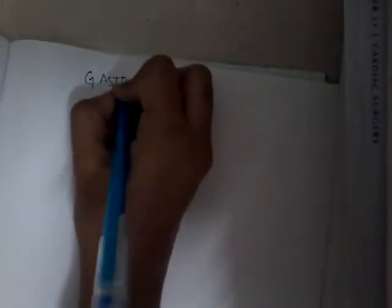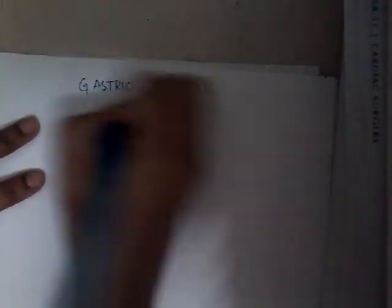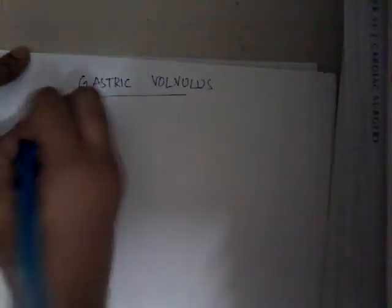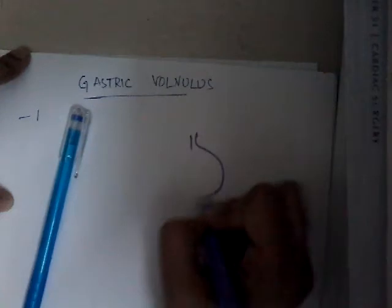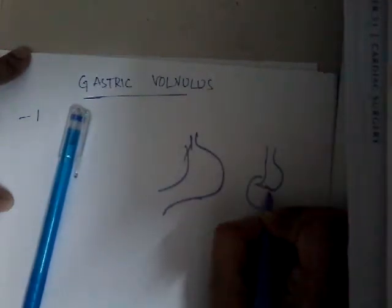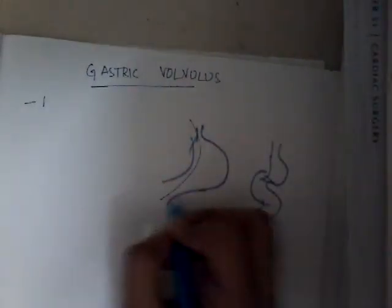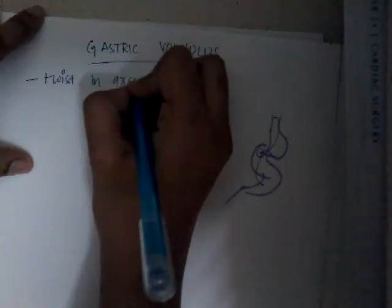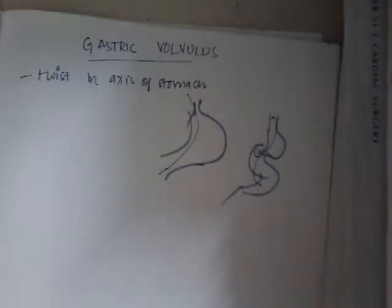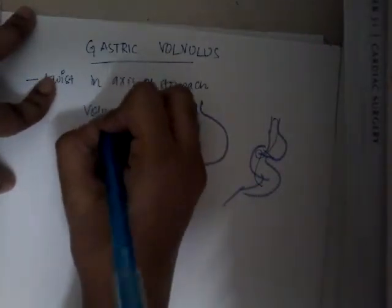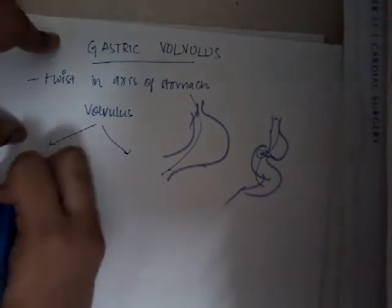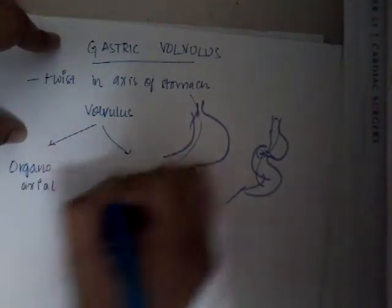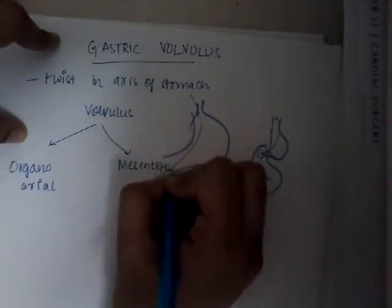Let us learn about one more topic: gastric volvulus. Volvulus means a twist in the axis — the stomach gets twisted. There are two types: number one, organo-axial, and number two, mesentericoaxial. Organo-axial is horizontal, whereas mesentericoaxial is vertical. Organo-axial is seen in children.